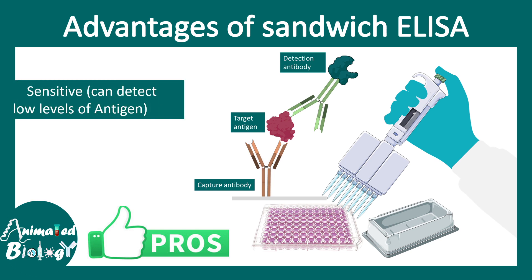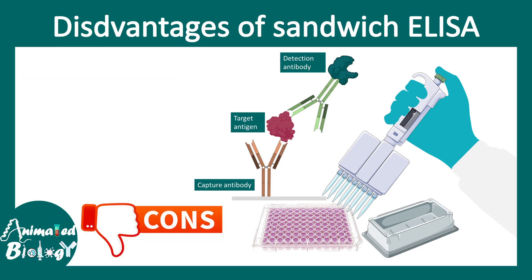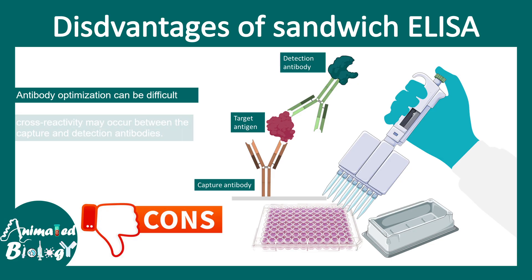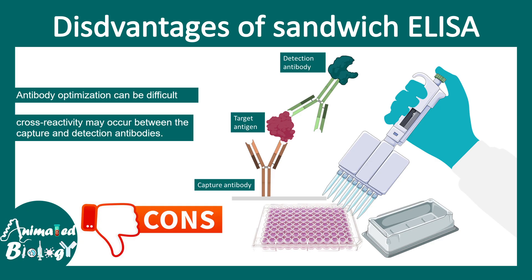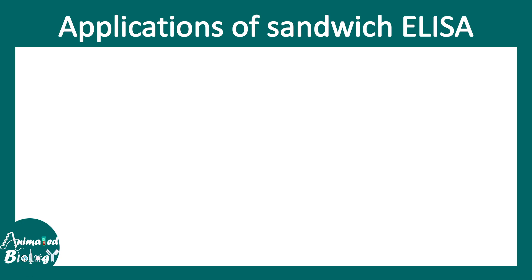Regarding the pros and cons of sandwich ELISA: it is highly sensitive and highly specific. However, antibody optimization can be difficult, and sometimes there is cross-reactivity between capture and detection antibodies. A lot of standardization is required for this method, but it remains highly sensitive.